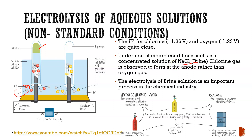This allows us to produce important chemicals such as chlorine for polymer chemistry, bleach, and hydrochloric acid. By increasing the concentration of halide ions, a different reaction occurs due to competition. This is because the E° values of chlorine and oxygen are quite close, and with more chloride ions present they begin reacting according to probability. This won't happen for sodium ions because sodium's reduction potential is too low — it will not be reduced while water is present.